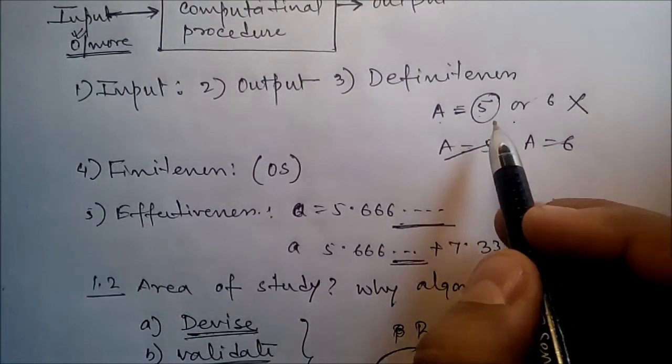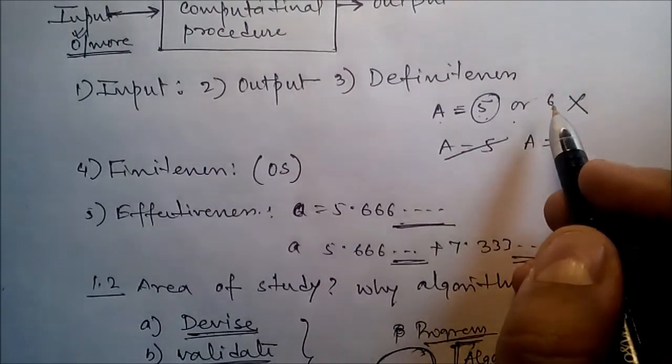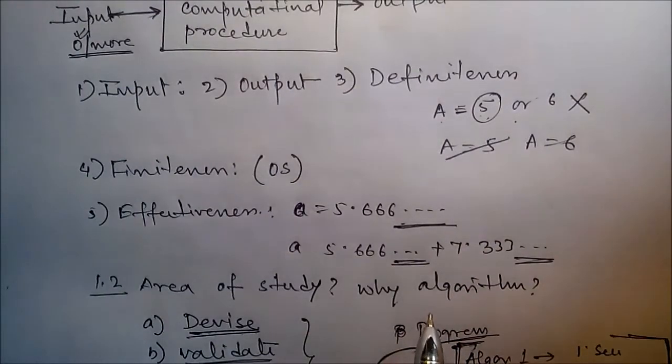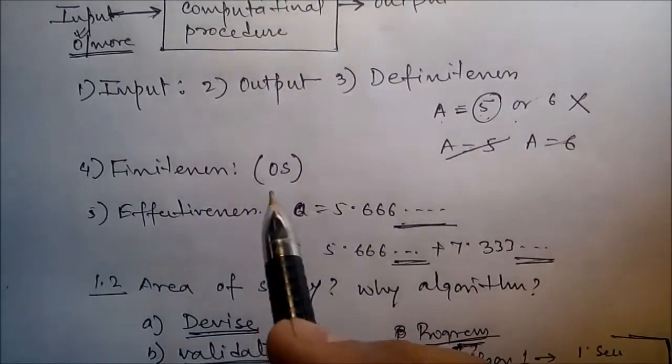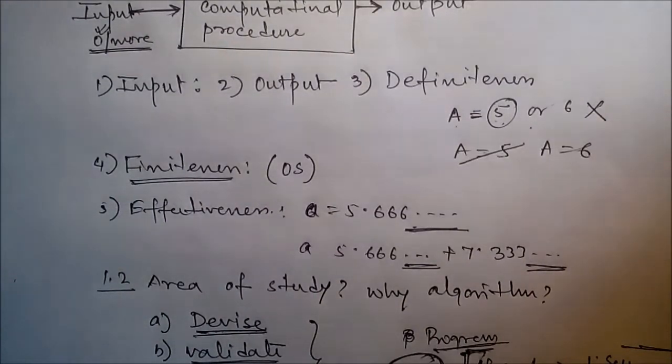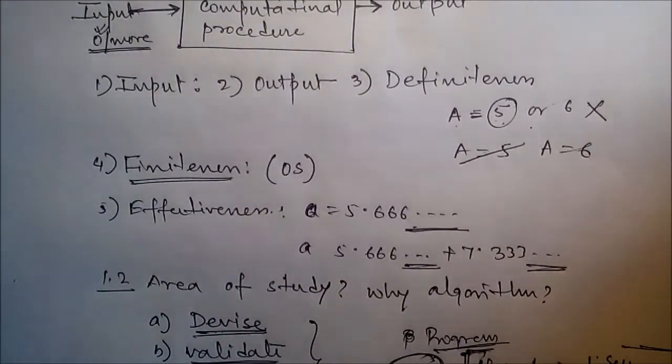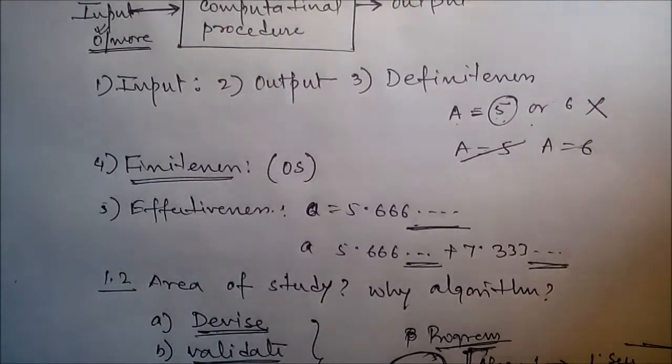Next is finiteness. If we trace out the instructions of an algorithm, then for all cases the algorithm terminates after a finite number of steps. An algorithm should be finite, it should terminate, it should stop. But another concept is the operating system - it is an infinite algorithm. To stop an operating system we have to force it, we have to shut it down.